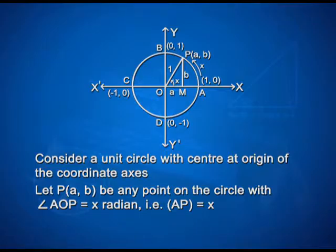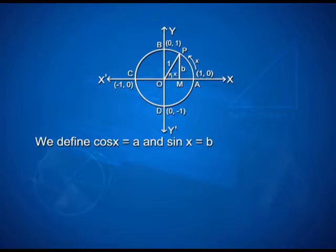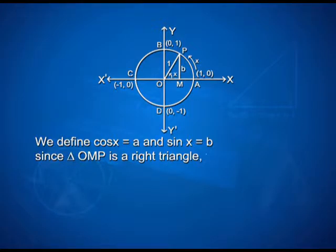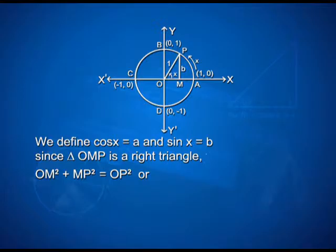Consider a unit circle with center at origin of the coordinate axis. Let P(A, B) be any point on the circle with angle AOP equal to x radian, that is, length of arc AB is equal to x. We define cos x equal to A and sin x equal to B. Since triangle OMP is a right triangle, we have OM² plus MP² equal to OP², or A² plus B² equal to 1.